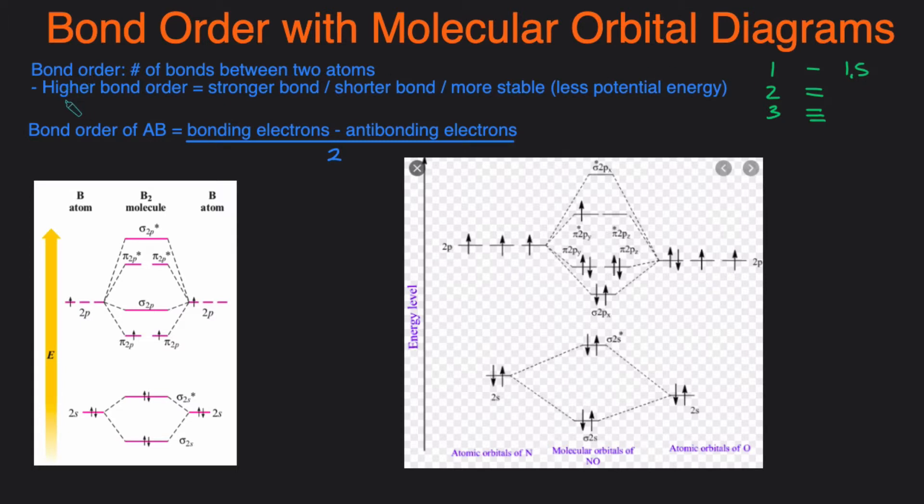In terms of other concepts you need to know regarding bond order, the higher the bond order the stronger the bond is, which also means that the bond is shorter because bond strength and bond length are inversely related. And lastly, the more stable the compound is, because when you have stronger bonds there's more energy that's released when you form them, so that causes the molecule to be more stable which means it has less potential energy.